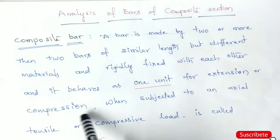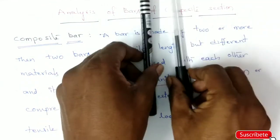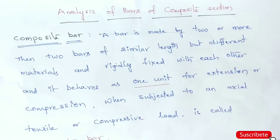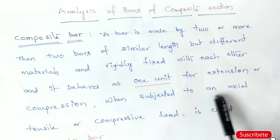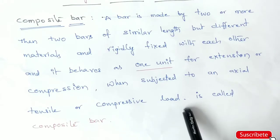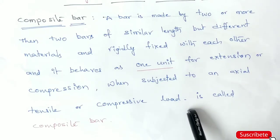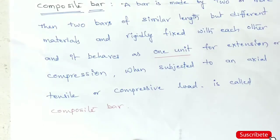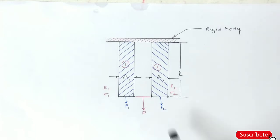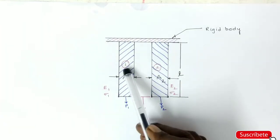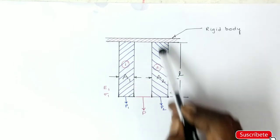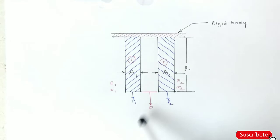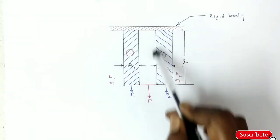When subjected to an axial tensile or compressive load, compressive and tensile load applied. This is a rigid body. This is element 1 and element 2.